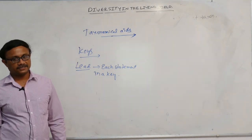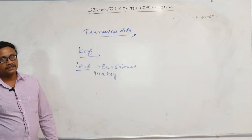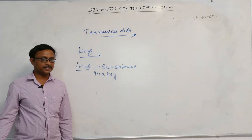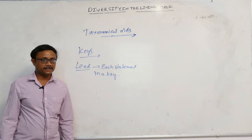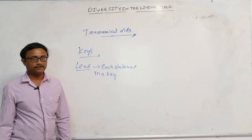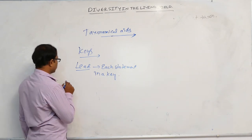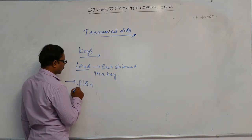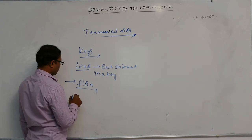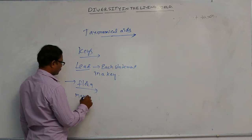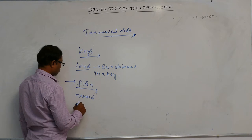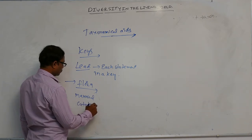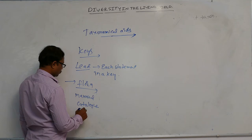Different categories have different keys — for example, species key, genus key, and family key. Some other taxonomical aids include flora, manual, catalog, and monograph.